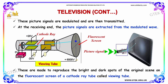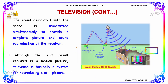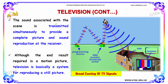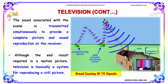The entire thing is called the viewing tube. The sound associated with the scene is transmitted simultaneously to provide a complete picture and sound reproduction at the receiver end.